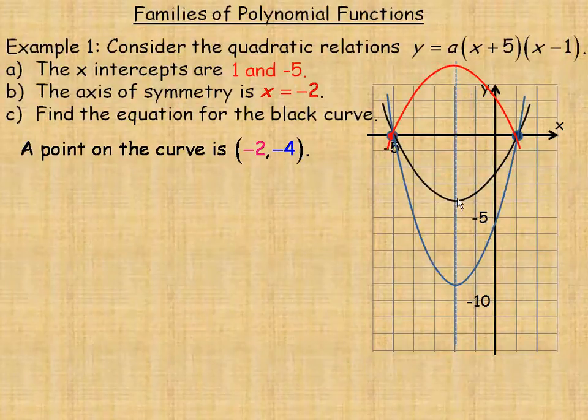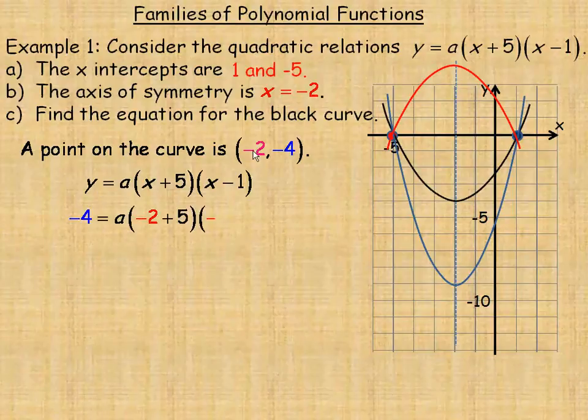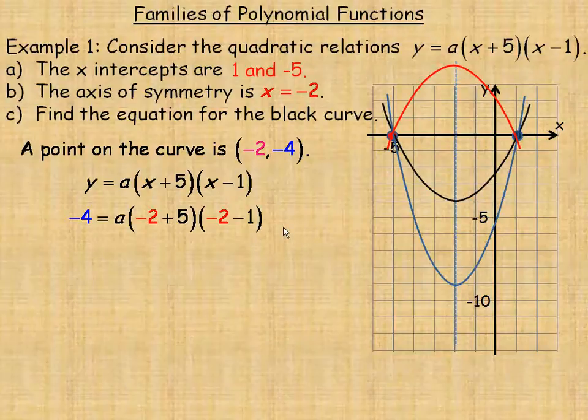What I'm going to do is take this equation here, and I'm going to substitute negative 4 in place of y, and negative 2 in place of x here and here. Then I can solve this equation for a, where really what you have to find is the stretch factor, which is what a is. Once you know that, then you can state the specific equation for any one of these curves.